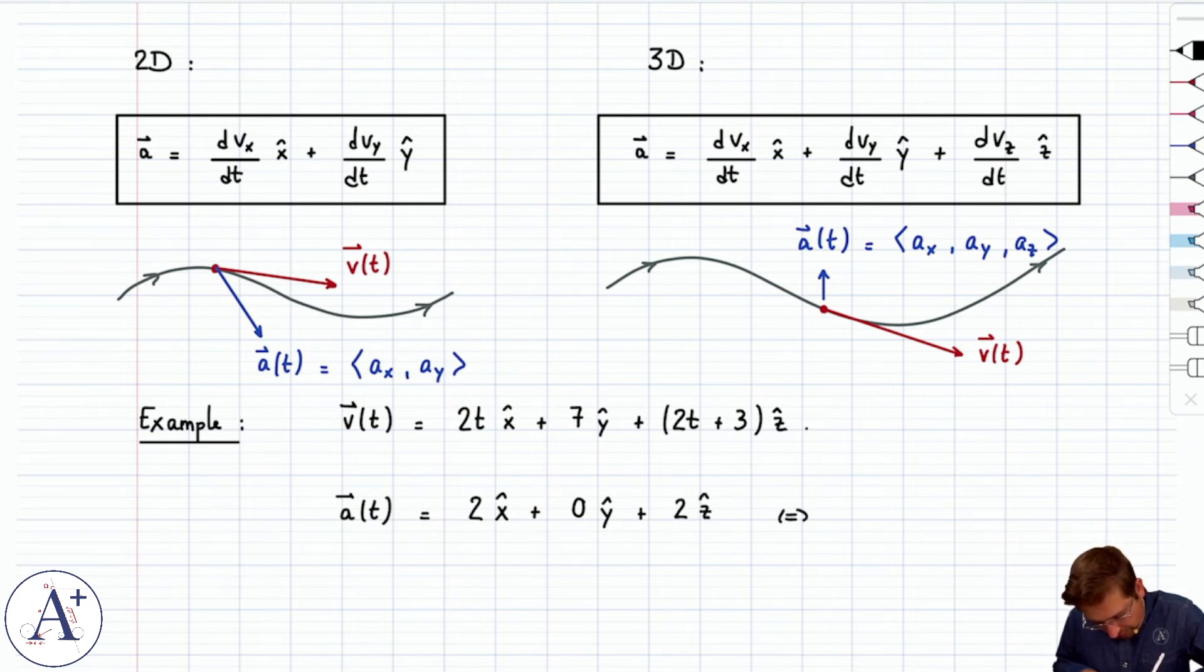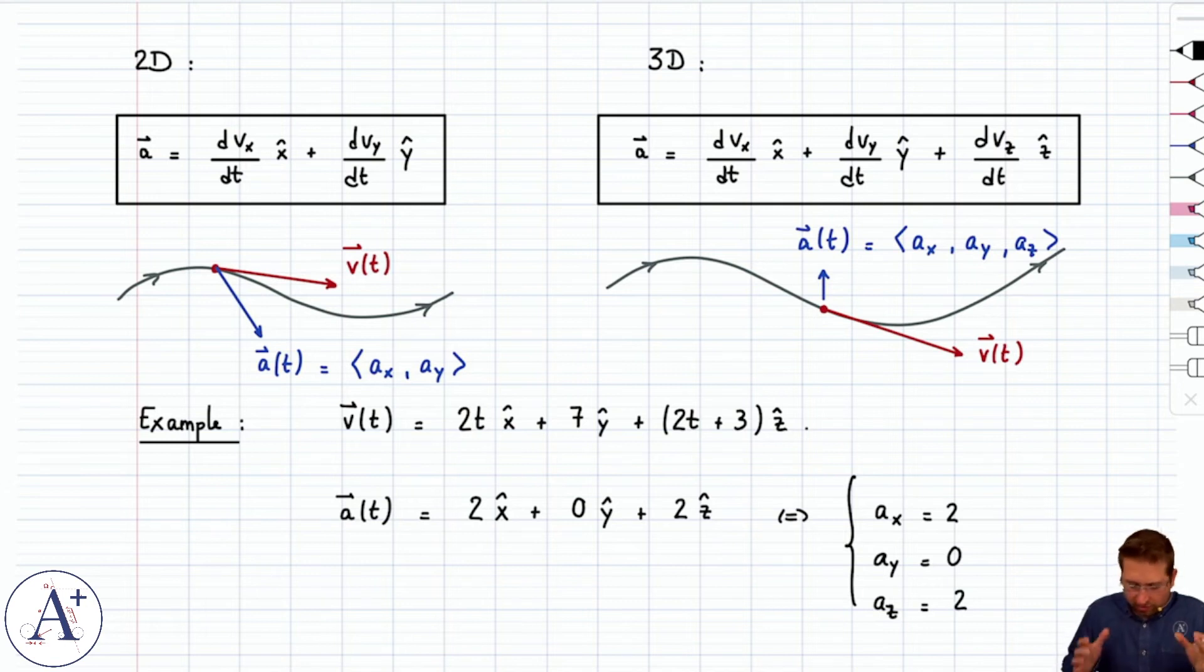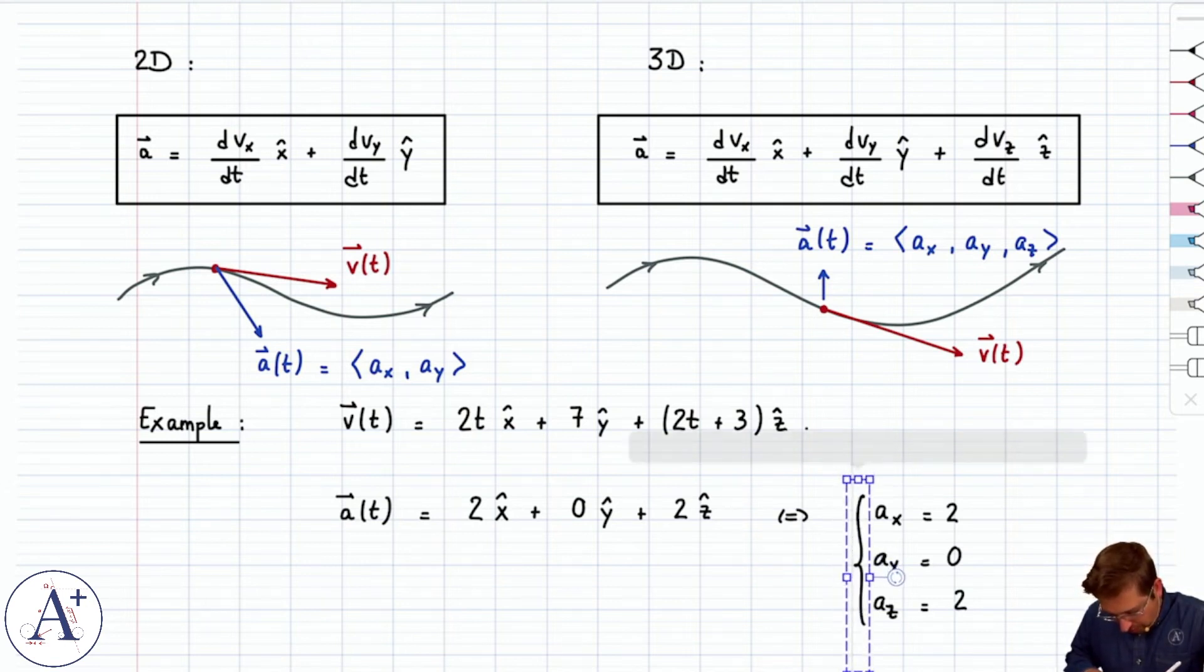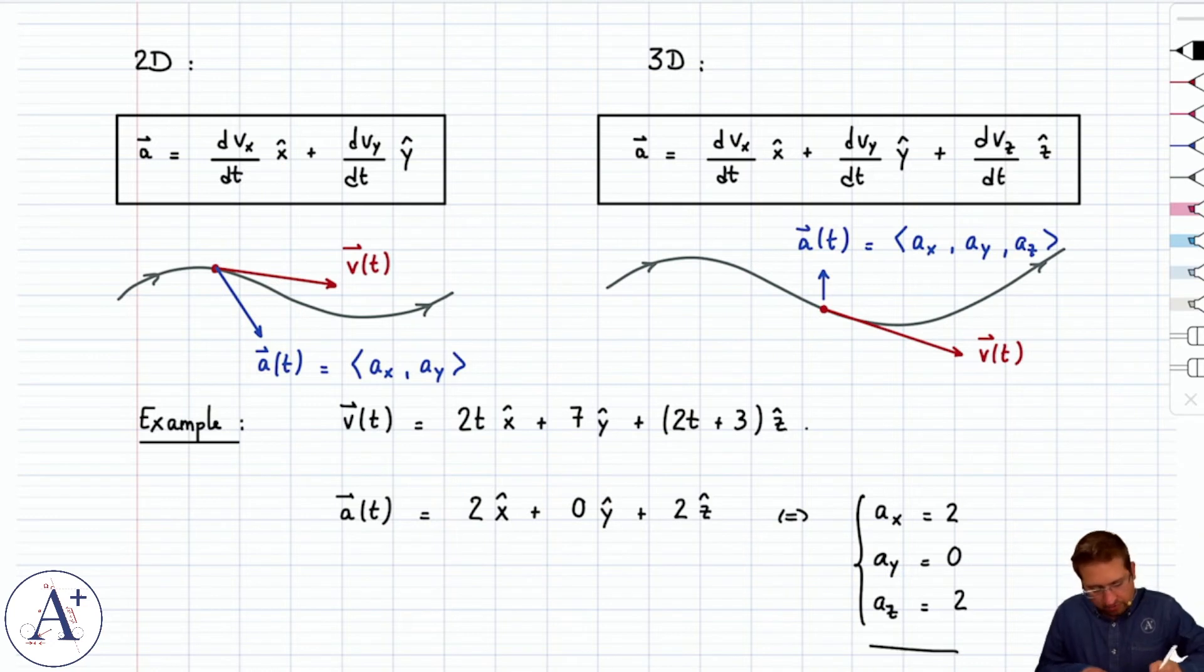And you can write this in a bit more of a condensed form, just like we mentioned previously. You could write ax is equal to 2, ay is equal to 0, and az is equal to 2. That's more of a compact form for the components of the vector. It's a bit of a preference for me to do it that way, but it's totally fine to write it that way.